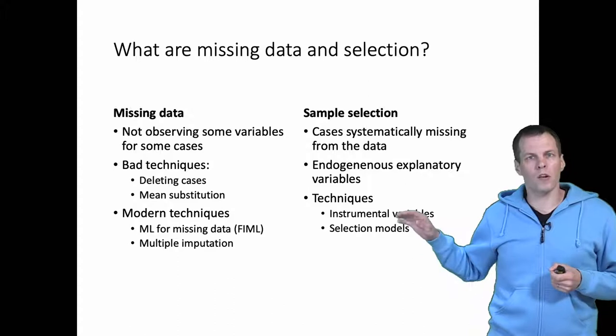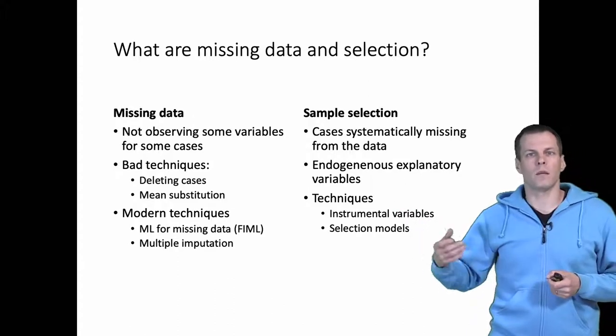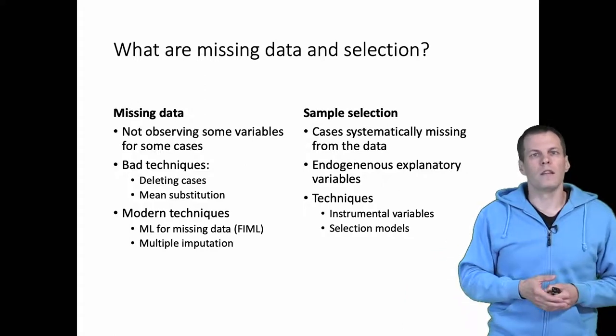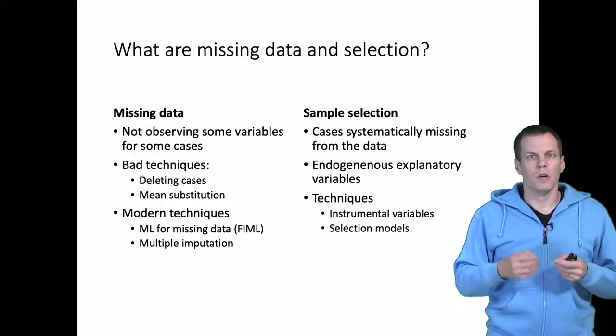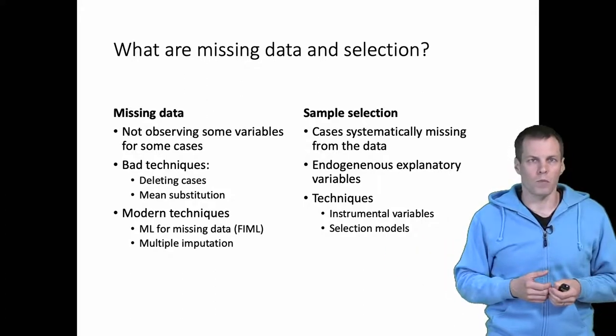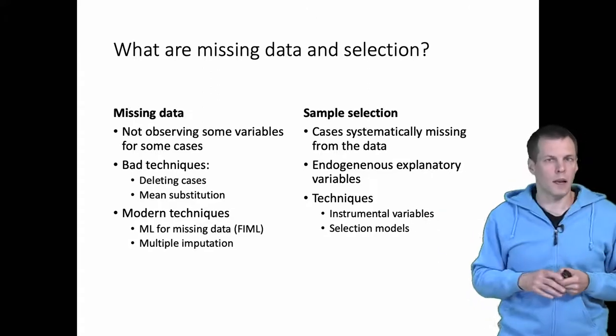The problem here is that you don't actually observe the wages that the women were offered; rather, you observe the wages that they got. There is systematic selection because the cases that you observe depend on the value of the dependent variable, and this is a problem. You can deal with this problem using a selection model.